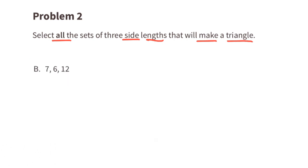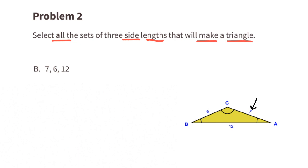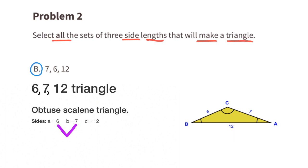For set B with side lengths 6, 7, and 12: as shown in the illustration, these do form a triangle. Since 6 plus 7 is 13, which is greater than 12, these three side lengths would form a triangle.